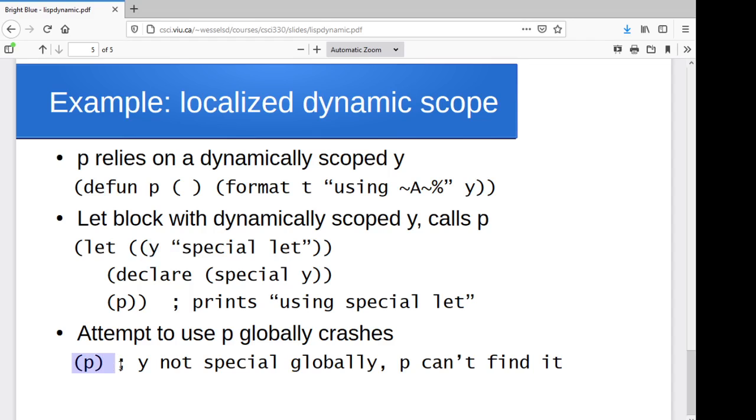If I was to call p globally from outside that let block, then p's got no knowledge of a y, right? The only reason p had knowledge of a y in here was because we said, inside my let block, that y is special, that y is dynamically scoped. So there's an interesting new twist to look at when you're thinking of scopes and variables.